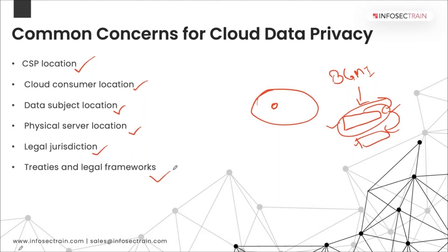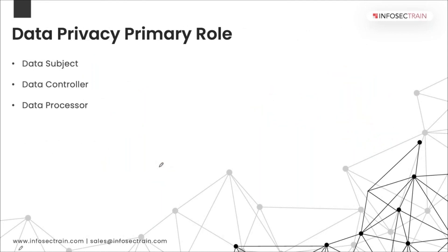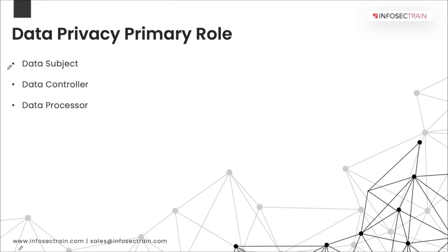Treaties and other legal frameworks also have an effect on data privacy, and we will consider some of these as well. Now, when we talk about data privacy, there are three primary rules. Even though there are others, in generic terms, around the globe across different rules, regulations, and laws, three things are at the center: data subject, data controller, and data processor.